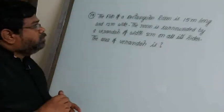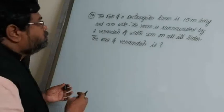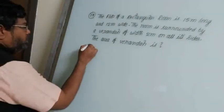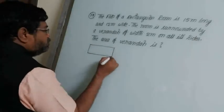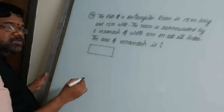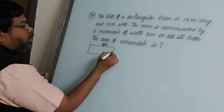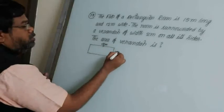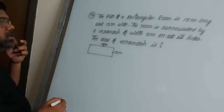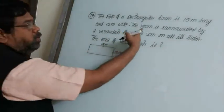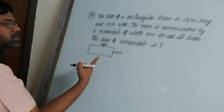The floor of a rectangular room is 15 meters long and 12 meters wide. So we have a rectangular room floor with length 15 meters and breadth 12 meters. The room is surrounded by a veranda of width 2 meters on all its sides.